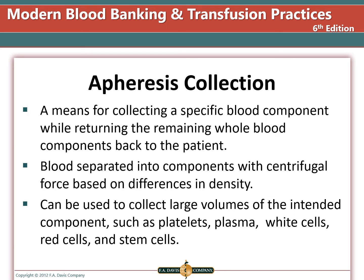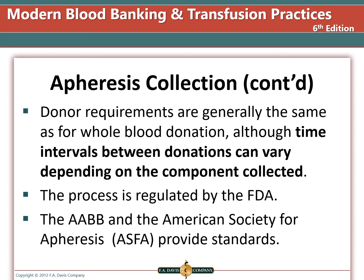Apheresis collection means collecting a specific blood component while returning the remaining whole blood components back to the patient. The blood is separated into components with centrifugal force based on differences in density. This can be used to collect large volumes of intended components such as platelets, plasma from AB blood donors, white blood cells, red blood cells from O donors, and stem cells. Donor requirements are generally the same for apheresis collection as for whole blood donations. The time intervals between donations can vary depending on the component collected, and this is regulated by the FDA, AABB, and the American Society for Apheresis.